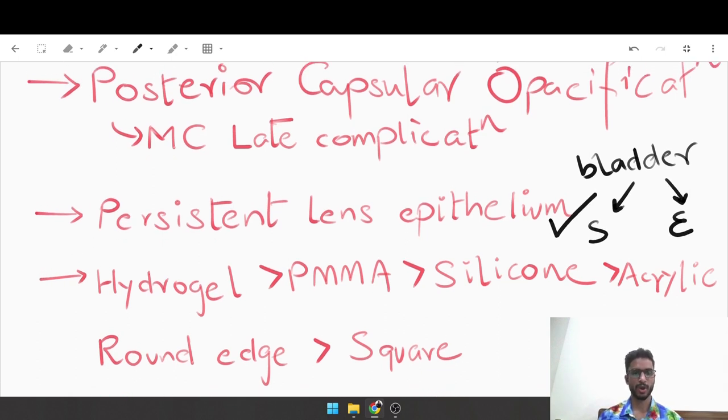PCO is most commonly seen with a hydrogel lens, then less with PMMA, lesser with silicone, and least with an acrylic hydrophobic lens. A round edge produces more PCO than a square edge because you can imagine a round edge is not going to fit as snugly as a square edge within the capsular bag.